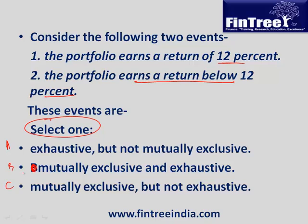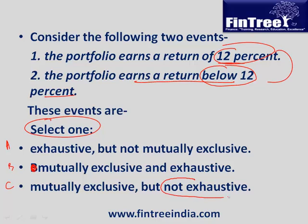Let us call them A, B, and C. The answer would be C, because we can earn 12%, we can earn less than 12%, or we can also earn more than 12%. Since only two possibilities are given, it is not exhaustive — exhaustive means every possible scenario. But it is mutually exclusive, because if you are earning less than 12% you cannot earn 12%. So C is the answer.